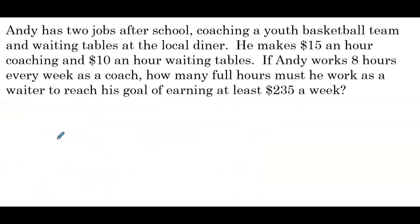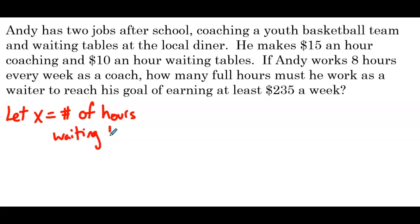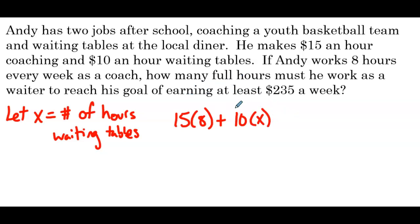Andy has two jobs after school: coaching a youth basketball team and waiting tables at the local diner. He makes $15 an hour coaching and $10 an hour waiting tables. If Andy works 8 hours every week as a coach, how many full hours must he work as a waiter to reach his goal of earning at least $235 a week? We're going to let x be the number of hours waiting tables. He wants to earn at least $235, so we want 15 times 8 plus 10x to be greater than or equal to $235.